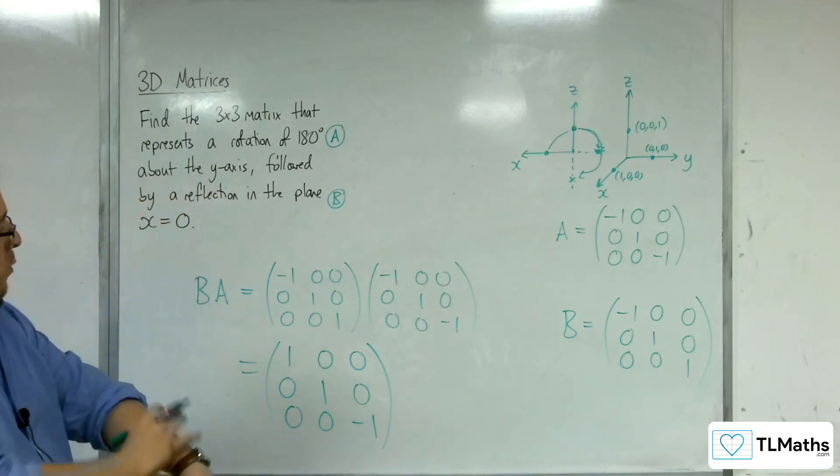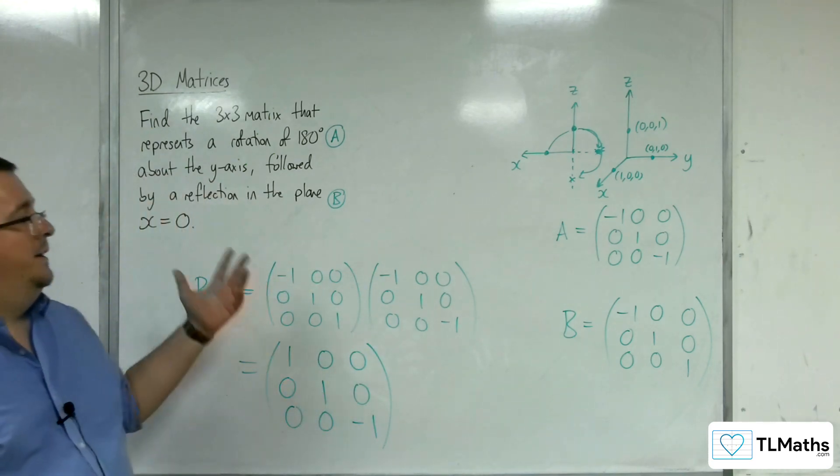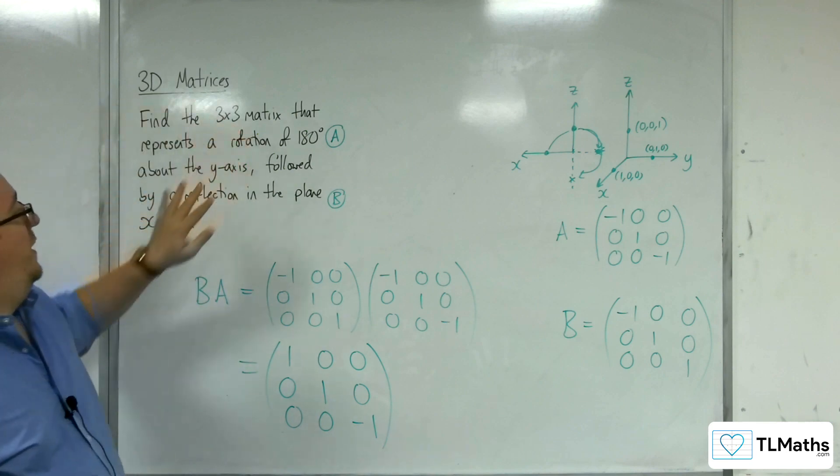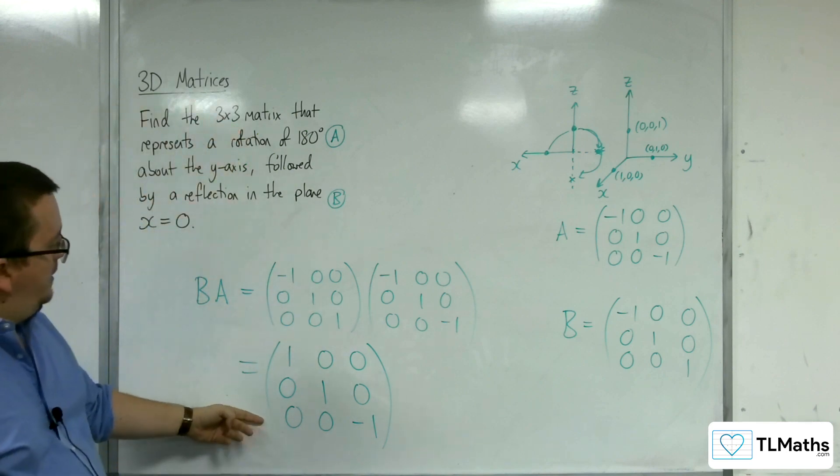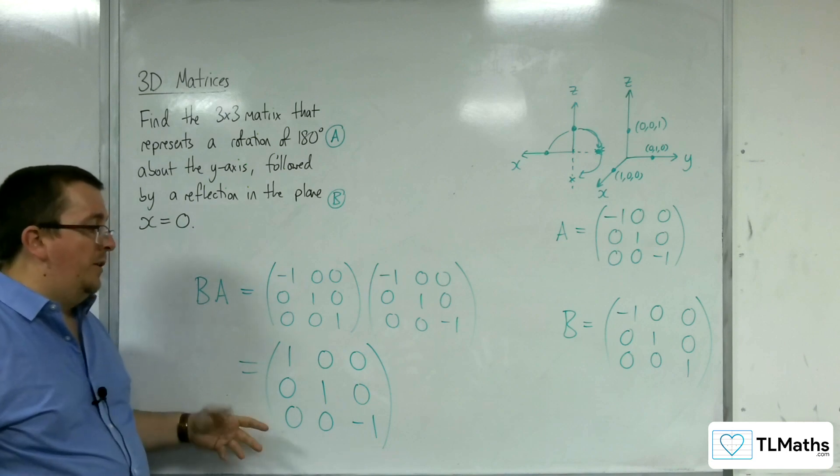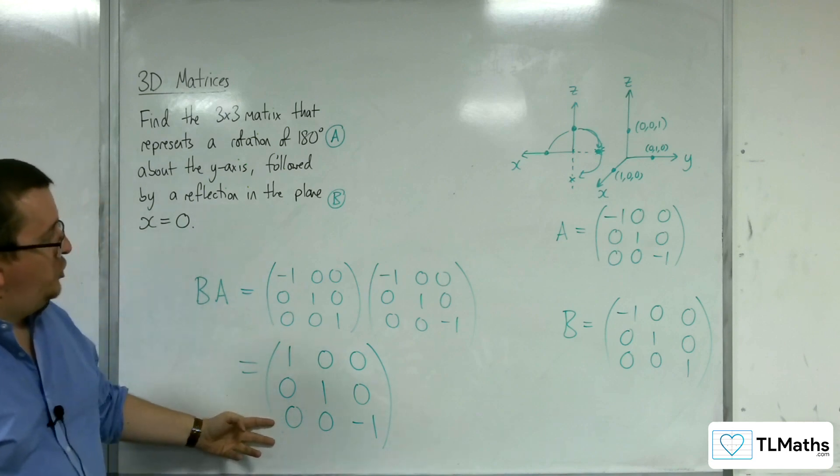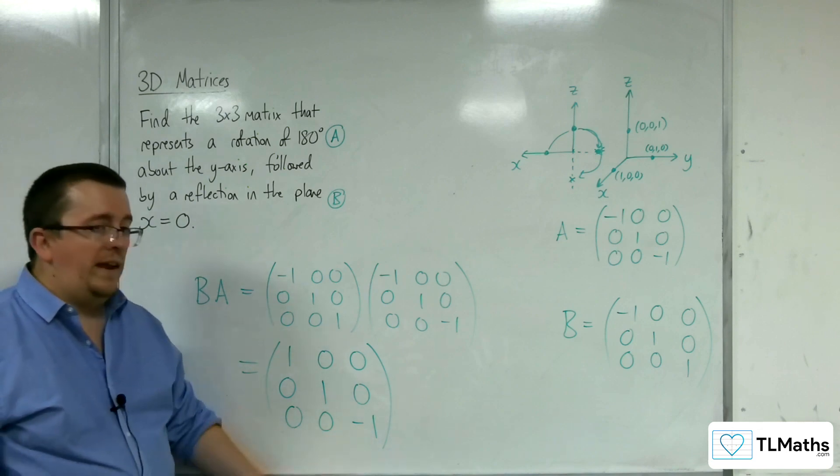And so, what we're finding is that if we do matrix A followed by matrix B, this is actually just a reflection. It ends up as being equivalent to a reflection in the plane z equals 0.